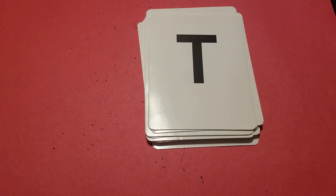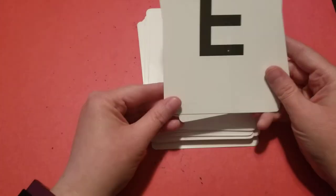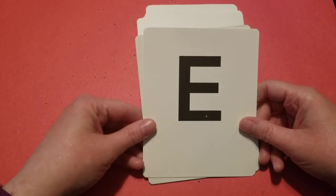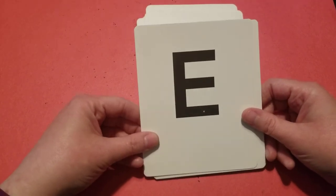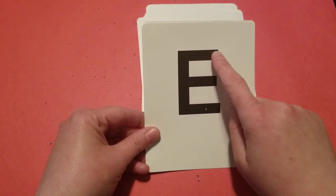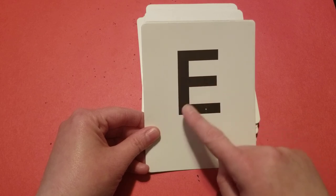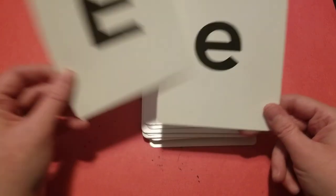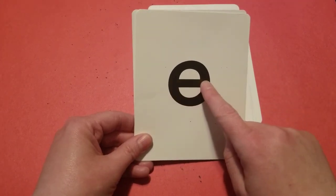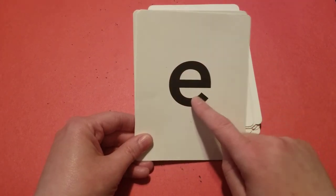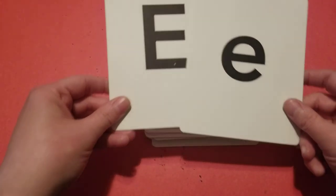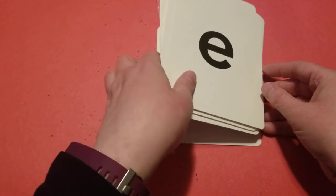Good job. And our new letter is the letter E. E makes the sound eh, eh, like egg. Here's the capital E. It's made with a straight line down, a line across the top, in the middle, and on the bottom. Here's the lowercase e. It's made with a line across, up, and around. That is letter E. Eh. Let's read a book that talks about that letter E.